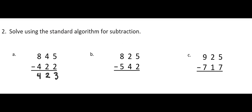In question B, starting in my ones place, 5 minus 2 is 3. In the tens place I have 2 and I'm supposed to take away 4, so I don't have enough tens for that subtraction. I'll take one of my hundreds, leaving seven hundreds, and decompose it into ten tens, combined with the two tens I already have. Now 12 minus 4 is 8, and 7 minus 5 is 2, for a final answer of 283.